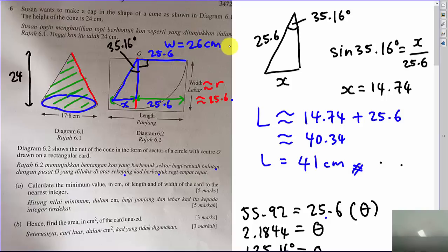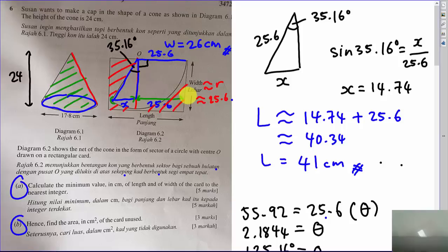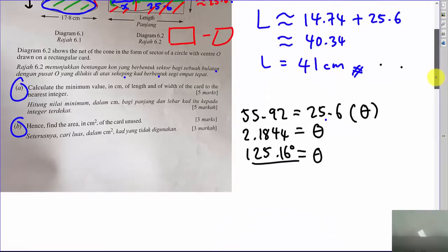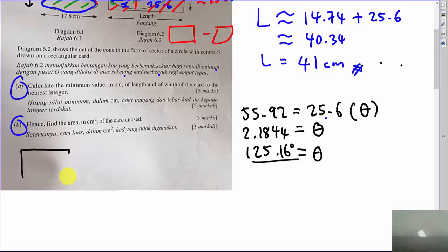Part B asks you to find the area of the unused card — the area outside the sector. The idea is: area of rectangle minus area of sector = unused area. The rectangle is 41 × 26. The sector has angle 2.1844 radians and radius 25.6.